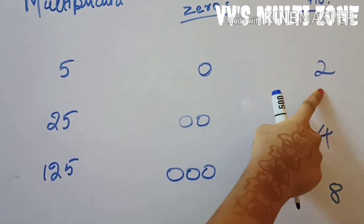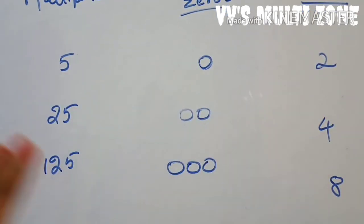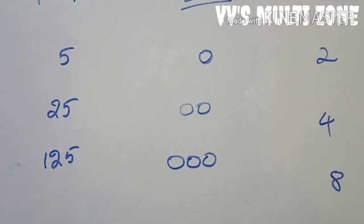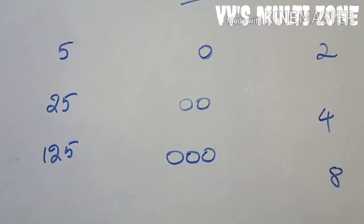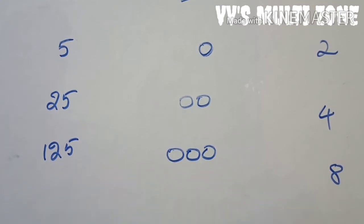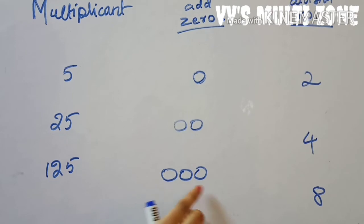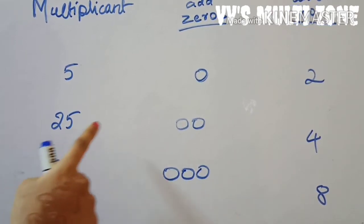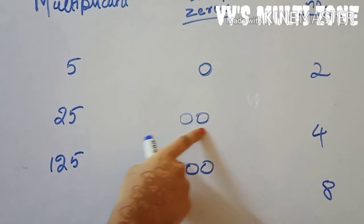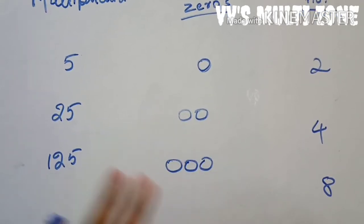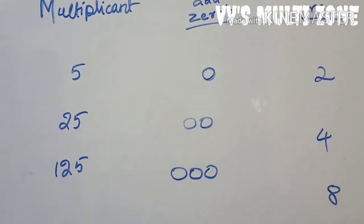The reason we divide by two for 5 is that 5 times 2 equals 10, so the ones digit is zero. For 25, 25 times 4 equals 100 — which has two zeros, so you add two zeros. For 125, 125 times 8 equals 1000 — which has three zeros, so you add three zeros.